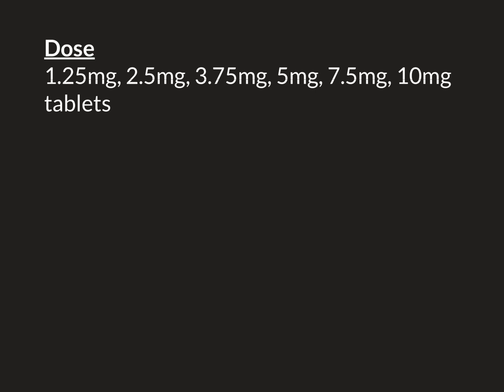Bisoprolol is usually taken once daily, usually in the morning. The starting dose is usually 2.5 milligrams once a day. However, if you've got a very frail patient — say an 80-year-old, a frail little old lady with a very small body weight — in that case you might start off at a more cautious dose of 1.25 milligrams.